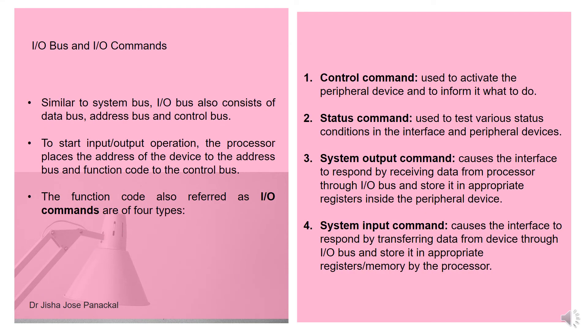The IO bus is similar to the system bus — it also consists of a data bus, address bus, and control bus. To start an input output operation, the processor places the address of the device on the address bus and a function code on the control bus. The function code is also known as IO commands. There are four types of IO commands: control command, status command, output command, and input command. The control command is used to activate the peripheral device and inform it what to do. The status command is used to test various status conditions in the interface and peripheral devices. The output command causes the interface to respond by receiving data from the processor through the IO bus and storing it in appropriate registers inside the peripheral device.